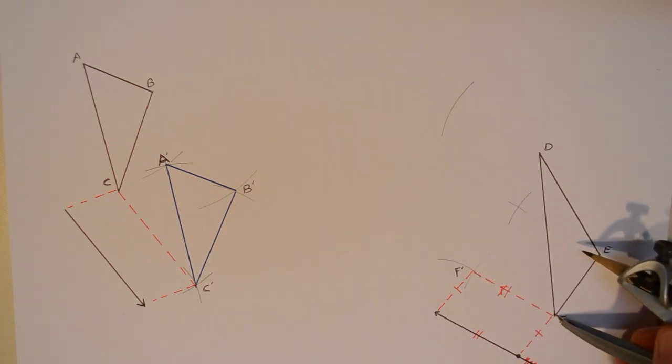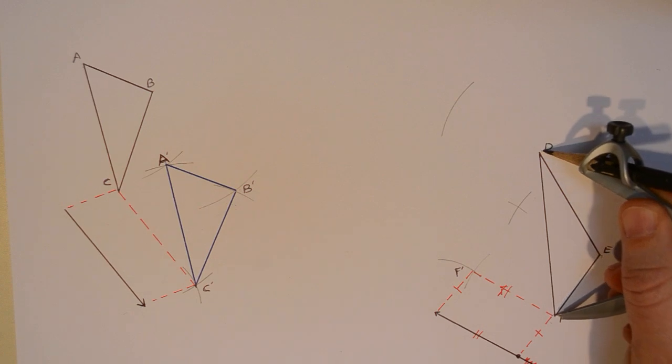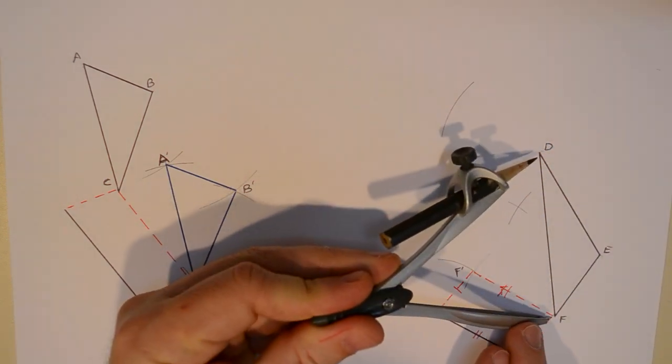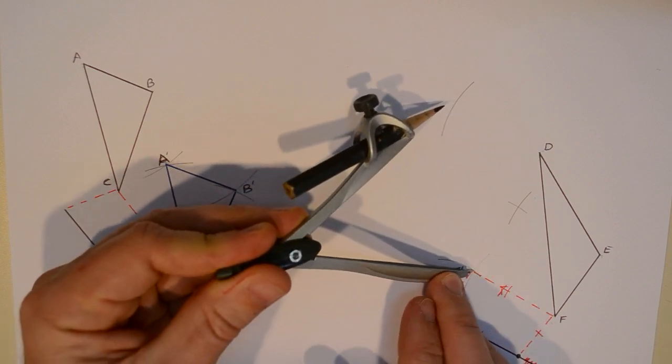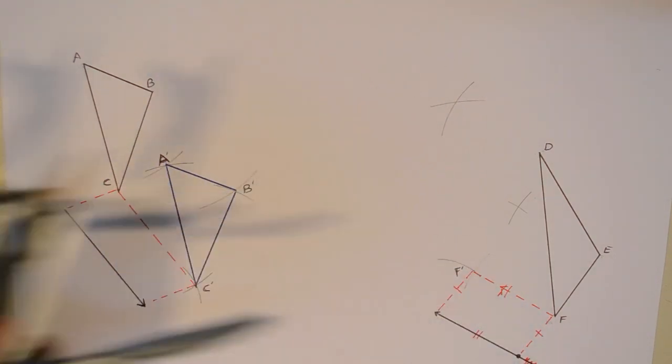And I'll do exactly the same from F to D. Measure out the original FD distance, so can you see that there? From F to D, that has to be the same as from F prime to D prime. X marks the spot.